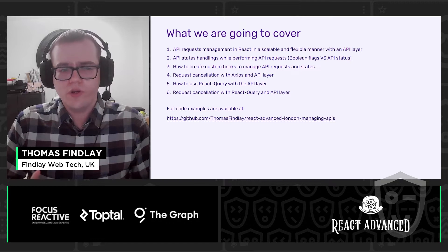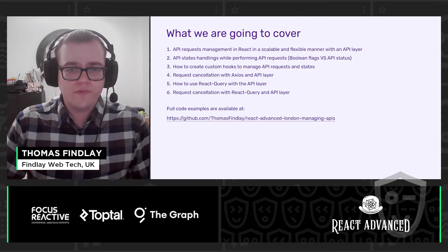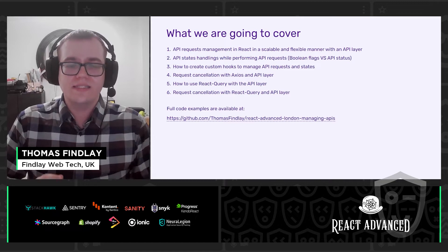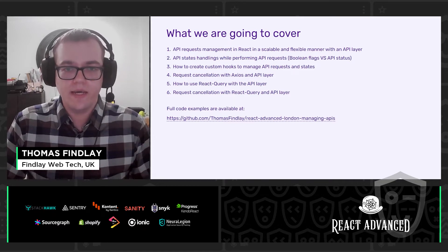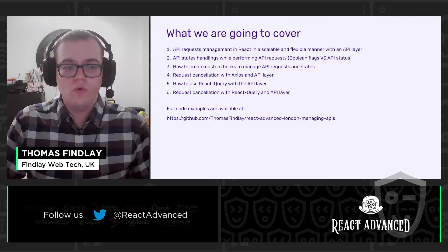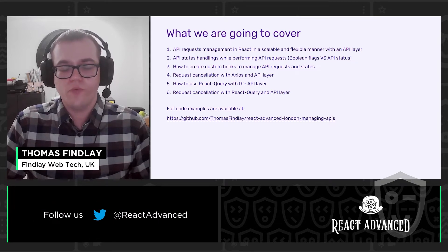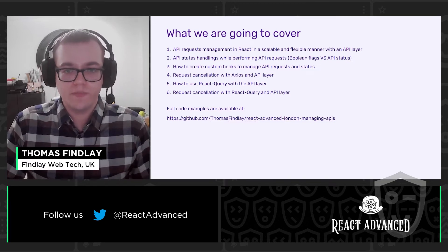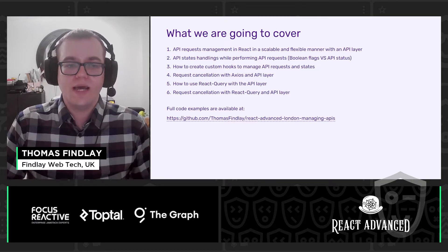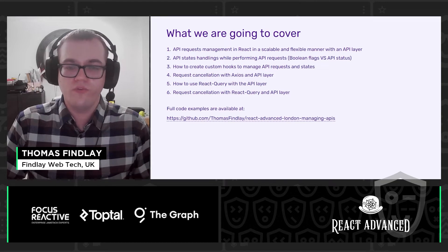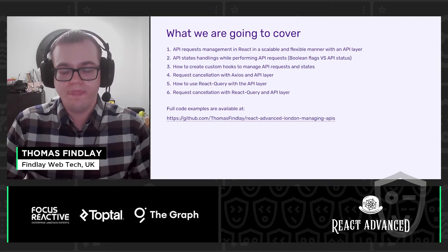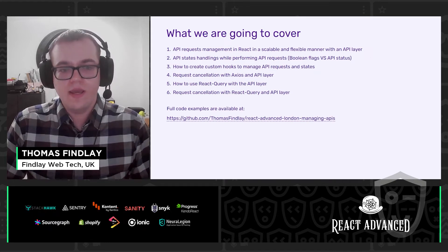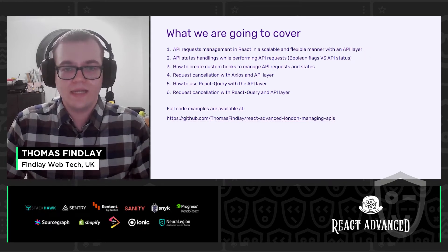Now, let's have a look at what we are going to cover today. First, we will start with how to manage API requests in React in a scalable and flexible manner with an API layer. Then we will see how to handle different API states while performing API requests. We'll also create custom hooks to manage API requests and states, as well as how to cancel requests with Axios and an API layer. Finally, we'll have a look at how to use React Query and an API layer and how to cancel requests with them.